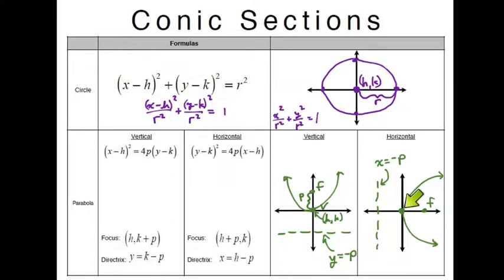Now if h, k was not at zero, zero, then this would obviously be a different value. Now just like before, you know how like you can open up or open down, this can open up to the right or it can open up to the left. How do we open it up to the left? If p was negative then you would be opening this up to the left and your focus point would be right here and your directrix would be right there.